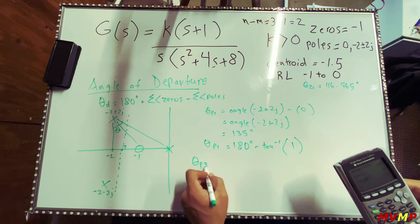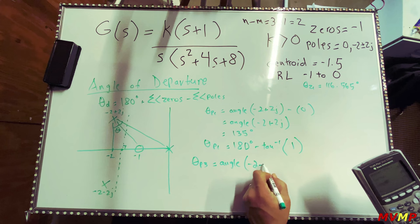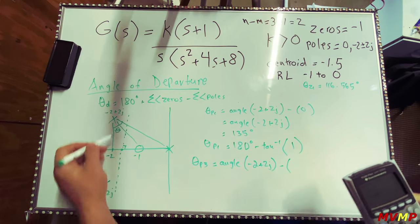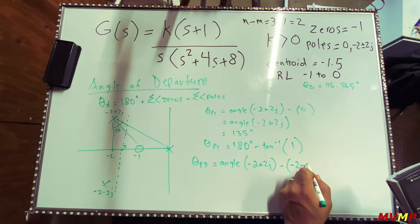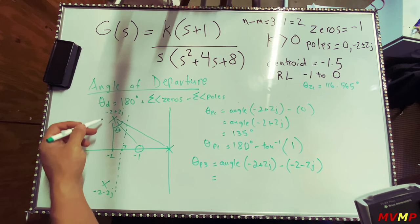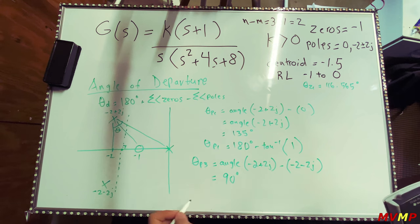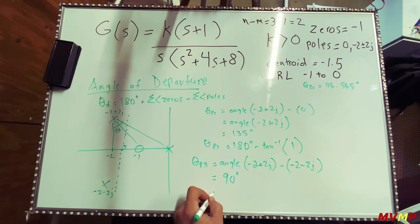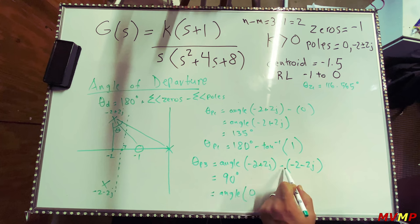For the other complex pole at negative 2 minus 2j: subtracting from the departing pole gives negative 2 plus 2j minus (negative 2 minus 2j), which equals zero plus 4j. By inspection, since the other complex pole is directly below the departing pole, this angle is 90 degrees. Confirming on the calculator, the angle of 4j is indeed 90 degrees.